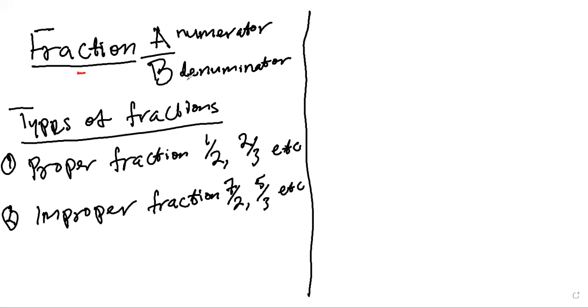I'm just using letters or alphabet to represent this, because that's what we do with algebra. So a could be one, a could be two, a could be whatever number. And b could be three or whatsoever.